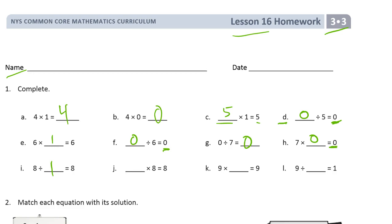And this would be something times 8 equals 8. It can only be 1. Because if you had 2 times 8, it would be 16. And anything higher than that, you'd get even bigger products. And it can't be 0, because then it would be 0 times 8 equals 8. So it has to be 1.